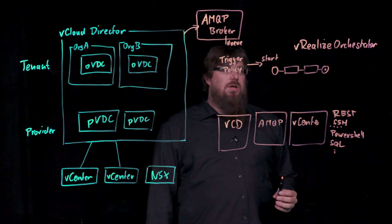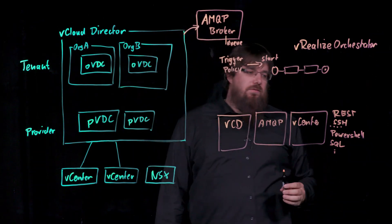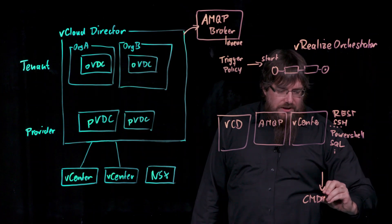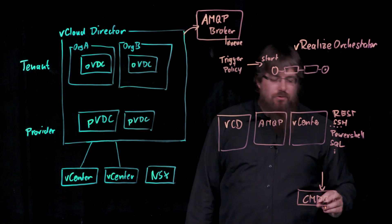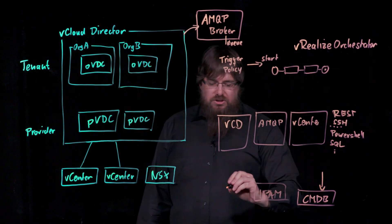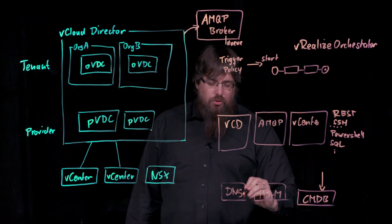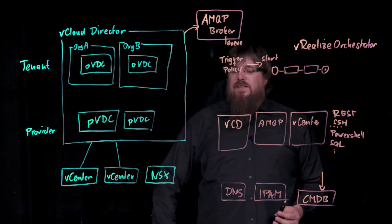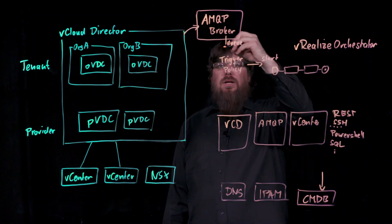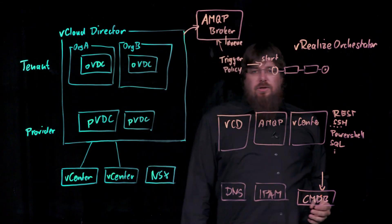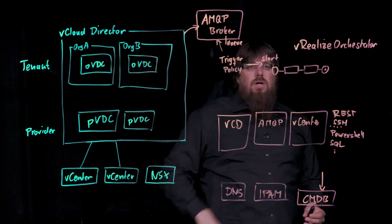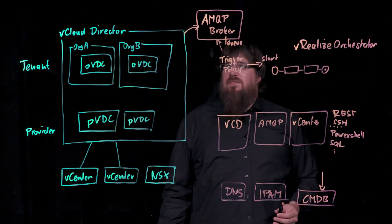For example, you can create a workflow triggered by a vCloud Director notification that uses the REST plugin to connect to an external configuration management database, an IPAM system, or a DNS server to register a newly deployed virtual machine or vApp while it is being deployed. The workflow can also use the AMQP plugin to send responses back to the AMQP broker and to vCloud Director. That is the first integration scenario — using blocking tasks and notifications of vCloud Director to kick off Orchestrator workflows as part of tasks and events in vCloud Director.